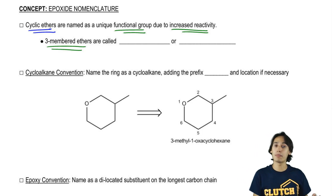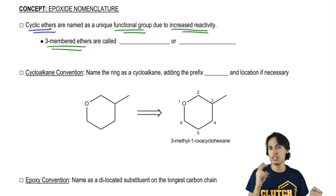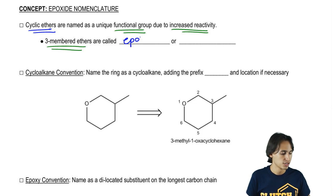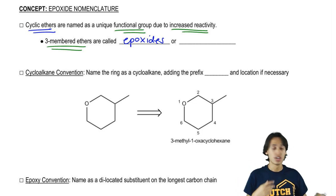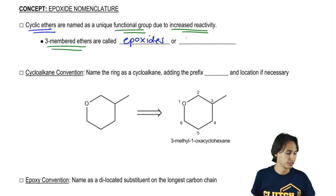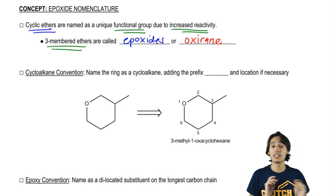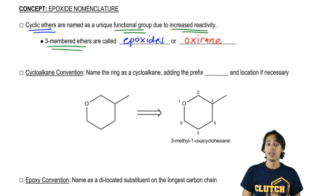What we call these three-membered cyclic ethers is – there's actually two common names for them. We call them epoxides. They're also called, in some textbooks, oxyranes. These are really synonyms for each other. An epoxide and an oxyrane are the same exact thing. It's just a three-membered cyclic ether.